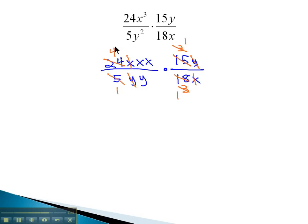What do we have left on top in the numerator? 4, x, x, and 1. 4 times 1 is 4, and the two x's multiplied together gives us x².